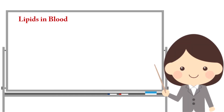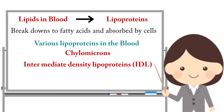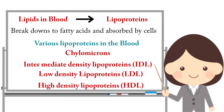Blood normally contains lipids in the form of lipoproteins. The various lipoproteins in the blood are: Chylomicrons, Intermediate Density Lipoprotein (IDL), Low Density Lipoprotein (LDL), and High Density Lipoprotein (HDL).